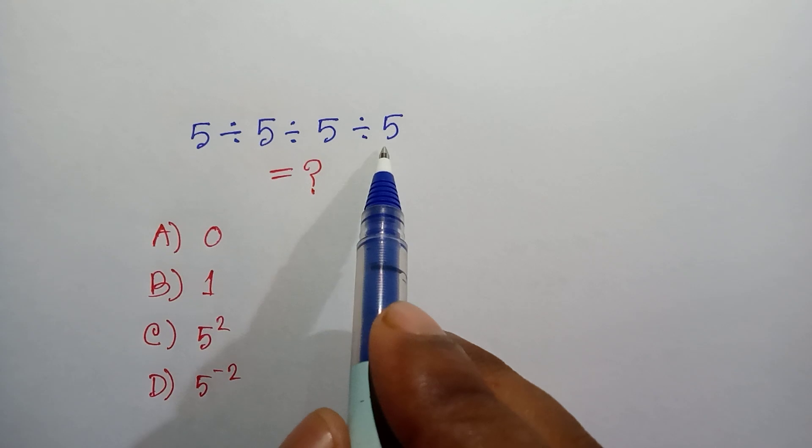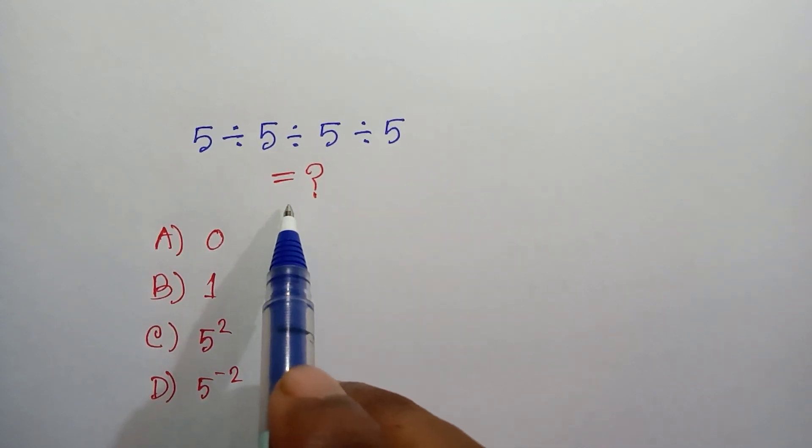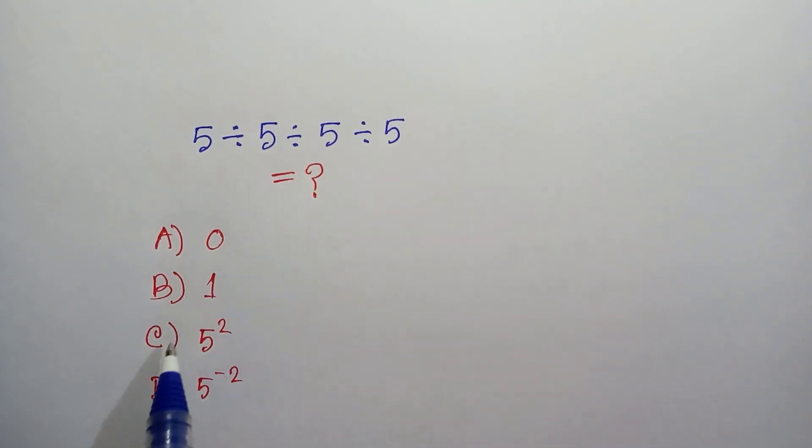This equals what? The problem shows the correct answer here: A is zero, B is one, C is 5 squared, and D is 5 to the power negative 2.